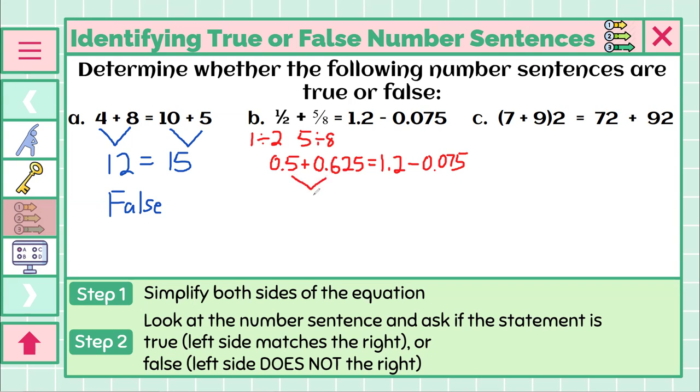And I end up with a final number of 1.125 for the left side. On the right side, we're doing 1.2 minus 0.075. So if I take 1.2 and I subtract 0.075, I get 1.125. So even though in the beginning we started with the left side being all fractions and the right side being all decimals, once we simplify, we get a true statement. The left side matches the right side. So this is a true number sentence.